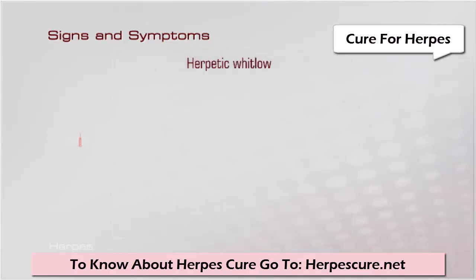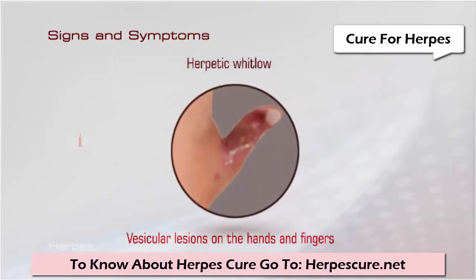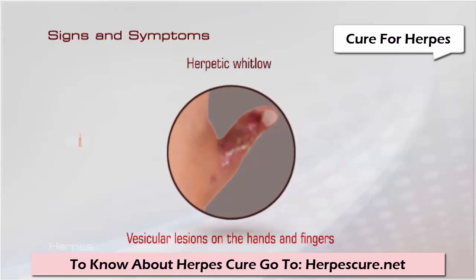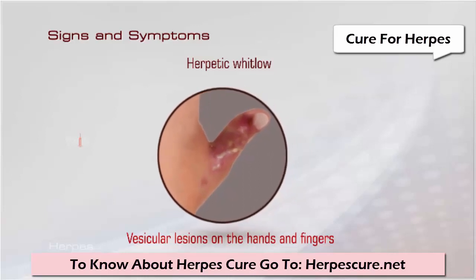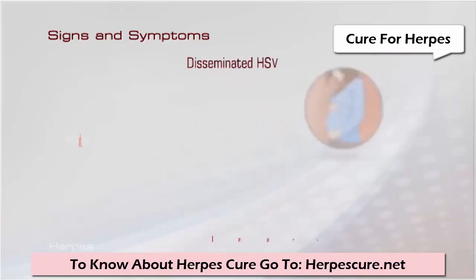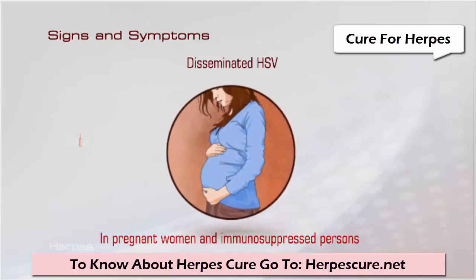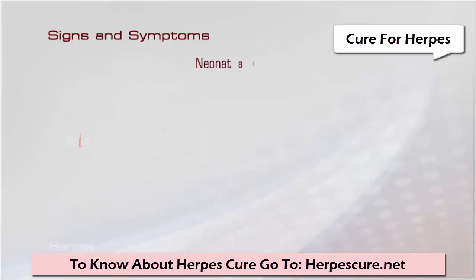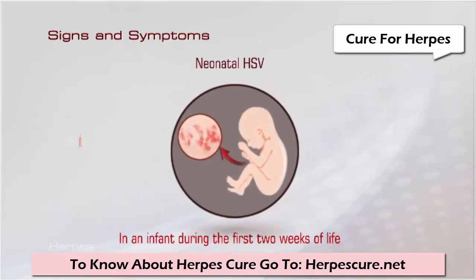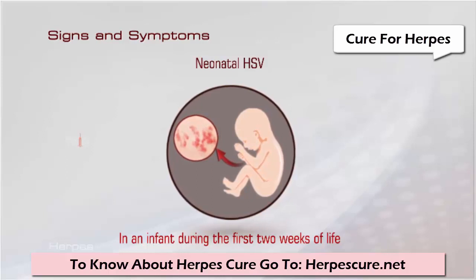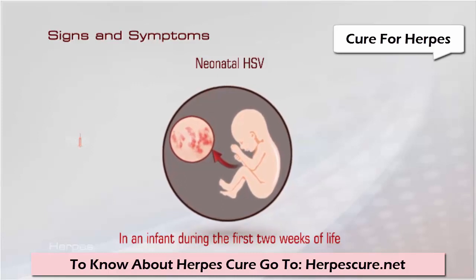Other herpes simplex virus infections include herpetic whitlow, which involves vesicular lesions on the hands and fingers caused by HSV-1, and usually occurs in children with a thumb-sucking habit. Disseminated HSV infection can occur in pregnant women and immunosuppressed persons. Neonatal HSV usually appears in an infant during the first two weeks of life and can cause infection in the skin, eyes, and lungs.